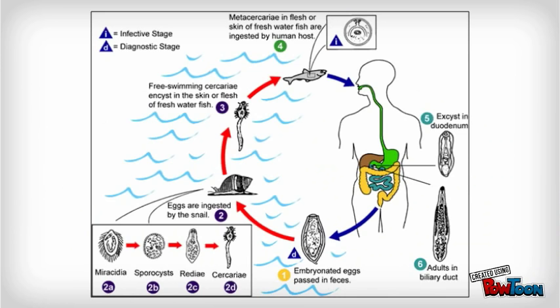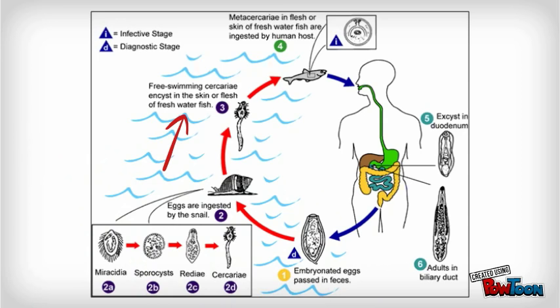Life cycle: embryonated eggs pass in feces and are ingested by snails. Free-swimming cercaria then encyst in the skin or flesh of freshwater fish as metacercaria. When humans ingest the metacercaria in the flesh or skin of freshwater fish, they excyst in the duodenum and mature into adults, which then migrate to the bile ducts.